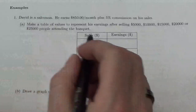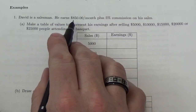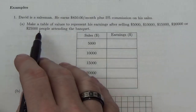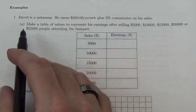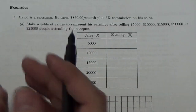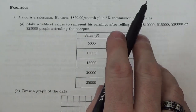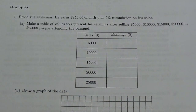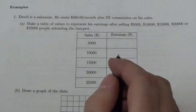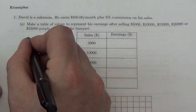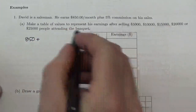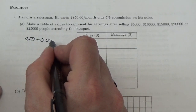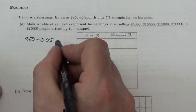Let's take a look at this question. David is a salesman. He earns $850 per month, plus 5% commission on his sales. We're going to map out his earnings by identifying what would happen if he sold this much, this much, and so on. He starts off earning $850, and then we're going to add 5% — using the decimal 0.05 — of his sales.